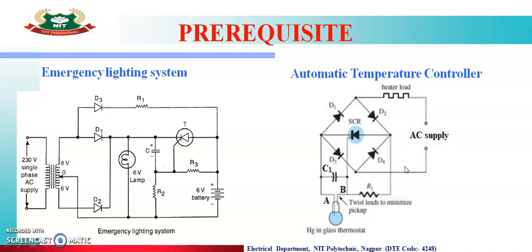When the SCR is off, the current flowing through the heater load is interrupted। Current जो heater load से जा रहा था वो बंद हो जाएगा, तो automatically temperature rise होना बंद हो जाएगा क्योंकि desired value तक temperature पहुँच गया है। Therefore it is known as automatic temperature controller.